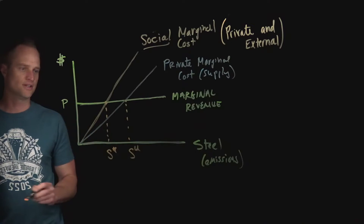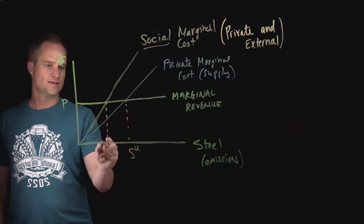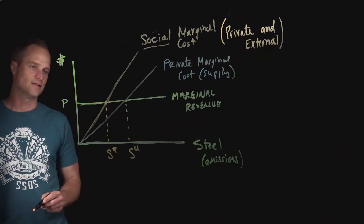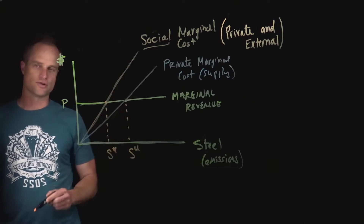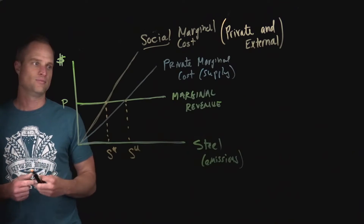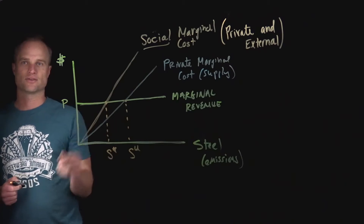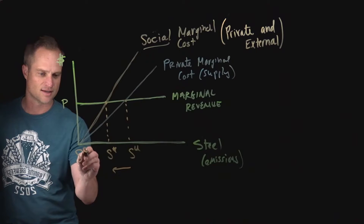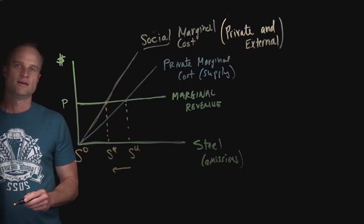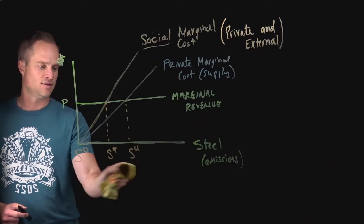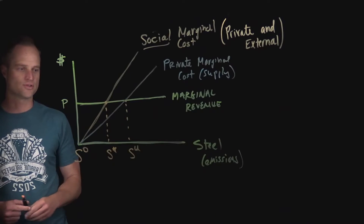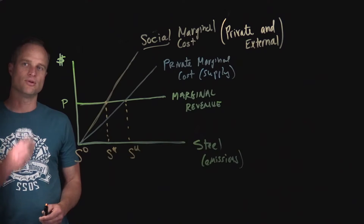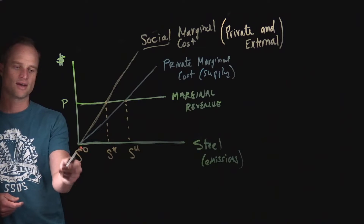I also want to mark S*, the efficient allocation of steel. It's lower than the unregulated level because the optimal condition is where marginal revenue equals social marginal cost — considering both private and external cost. And we'll put S-naught (S₀) as zero steel production. This will be important depending on who has the rights: does the steel firm have the right to produce (baseline is S^U), or does the laundry firm have the right not to be polluted (baseline is zero steel production)?